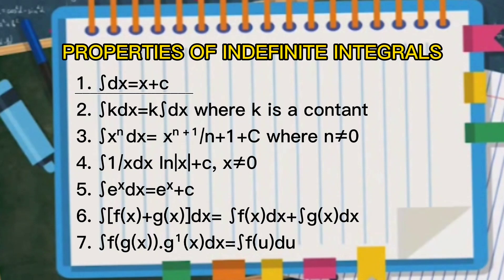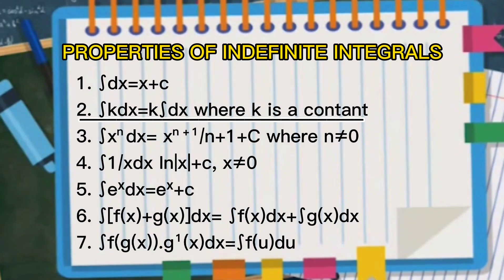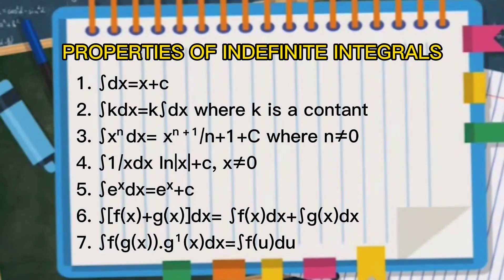These are the properties of indefinite integrals. Property number one: the integral of dx is equal to x plus C. Property number two: the integral of k dx is equal to k times the integral of dx, where k is a constant. Property number three: the integral of x to the power of n dx is equal to x to the power of n plus 1, over n plus 1, plus C, where n is not equal to zero.